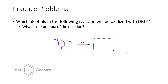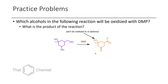In this first problem, we have this triol and we treat it with Dess-Martin periodinane. The interesting problem here is we have three different types of alcohols: a primary, a secondary, and a tertiary alcohol. What will the product of this reaction be? We'll actually get the ketone and the aldehyde, but the tertiary alcohol won't react because it can't be oxidized to a carbonyl — it's a tertiary center and already fully substituted.